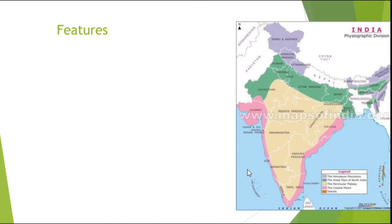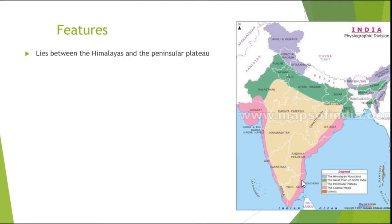This image of India shows its physiographic divisions. Blue color represents the Northern Mountain. Green shade represents the Northern Plain. To the south of the North Indian Plain lies the Peninsular Plateau. Both sides of the Peninsular Plateau are shaded with pink color, which depicts the coastal plain. And on the seas, we have islands. The North Indian Plain lies between the Himalayas and the Peninsular Plateau.